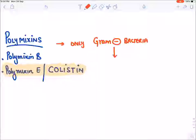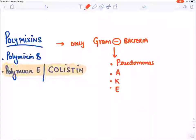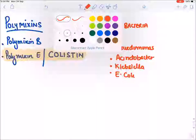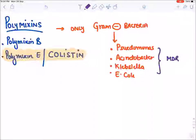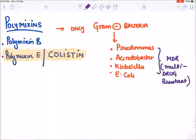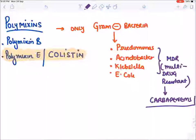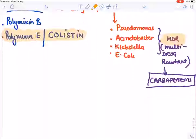The main gram negative bacteria targeted are pseudomonas, Acinetobacter, Klebsiella, and E. coli. They are not the drug of choice routinely — they are the drug of choice in MDR (multi-drug resistant) species. Generally, carbapenems are given as the last drug; if carbapenem-resistant, these bacteria are called MDR bacteria, and in those cases we give colistin IV.